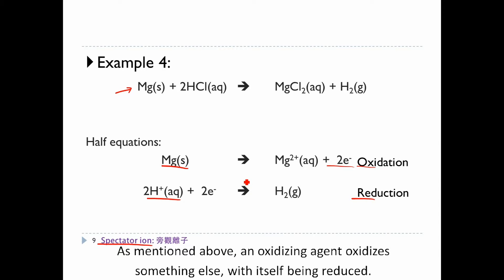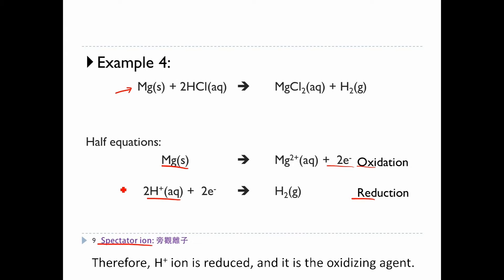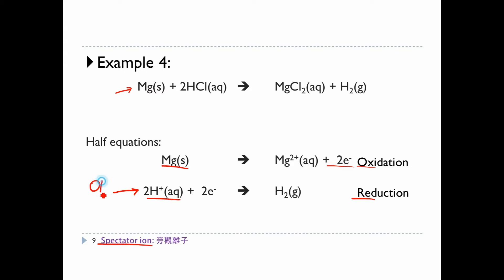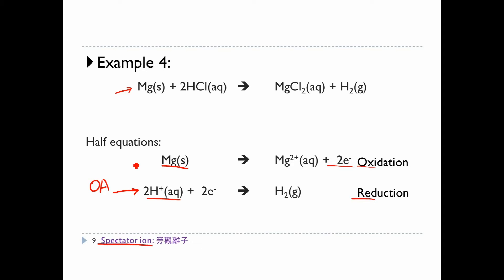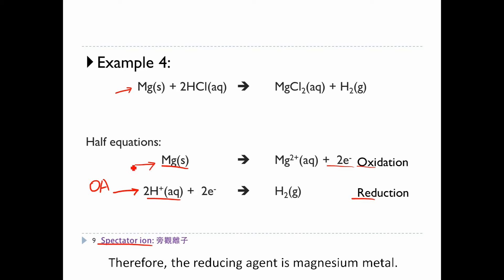An oxidizing agent oxidizes something else with itself being reduced. Therefore, H+ ion is reduced and it is the oxidizing agent. A reducing agent reduces something else with itself being oxidized. Therefore, the reducing agent is magnesium metal.